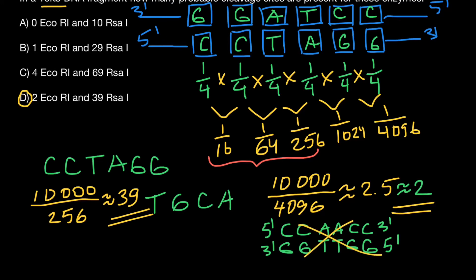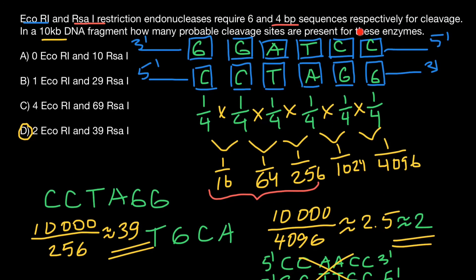When we talk about restriction endonucleases, we usually talk about sequences that are palindromic. A palindromic restriction endonuclease recognizes one site on one strand of the DNA, and on the other strand it's going to be the same site at the same place — not at a different place. So we don't have to multiply our answer by two. That's all for today; thank you for your attention. Please subscribe for my new videos that I post almost every day, and see you in the next video.